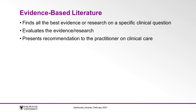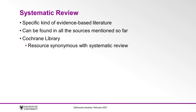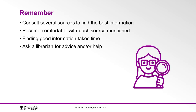Evidence-based literature is designed to find all the best evidence or research on a specific clinical question, evaluate it, and present a recommendation to the practitioner on clinical care. Systematic reviews are a specific kind of evidence-based literature. Systematic reviews and evidence-based literature can be found in all the sources we've mentioned so far. One resource in particular that is synonymous with a systematic review is the Cochrane Library.